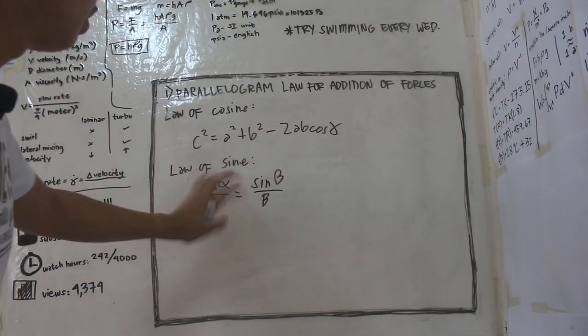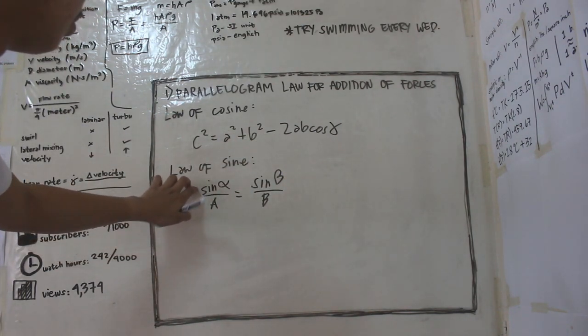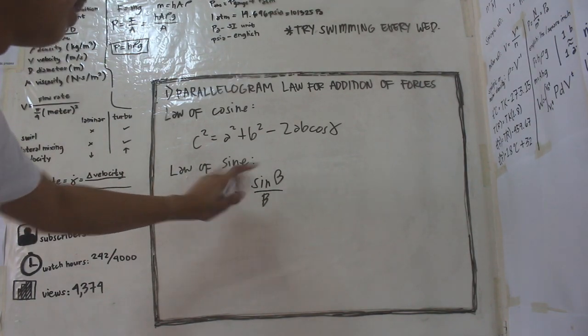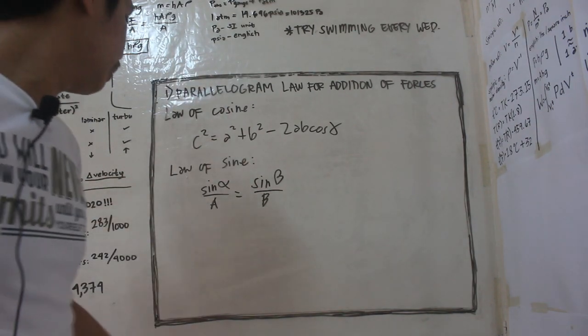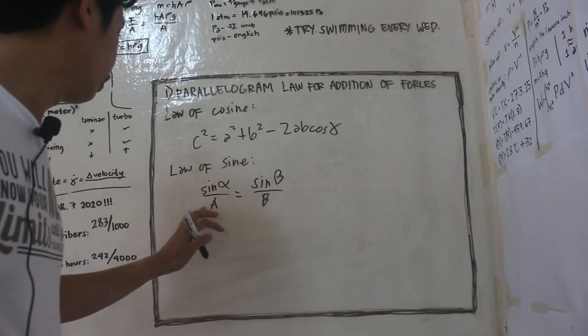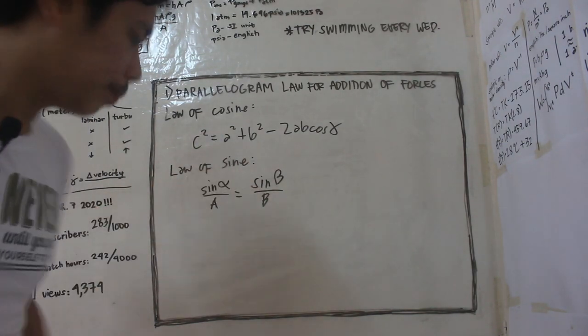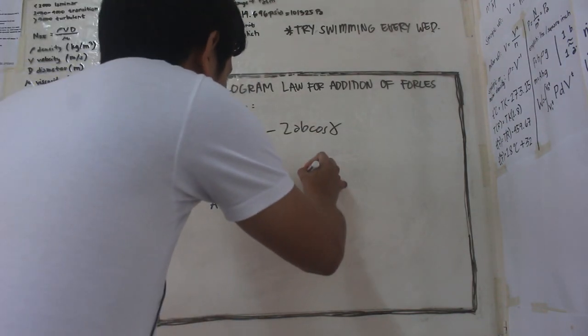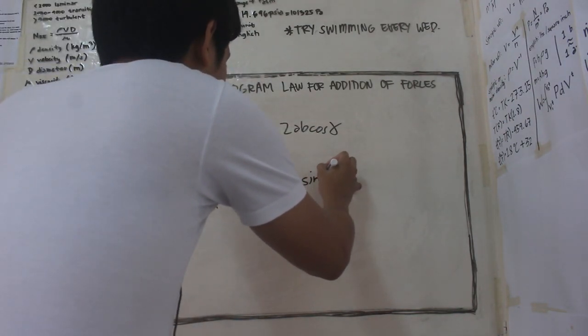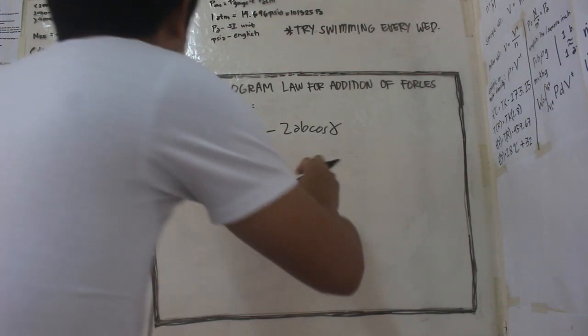So ito guys, ito yung mga sides ng triangle. Tapos eto sa ibabaw, eto yung angle nya, yung alpha, beta, at saka gamma. Yun, eto yung gano sya kahaban. So pwede itong ma-interchange and eto rin is equal rin to sa sin gamma over c.